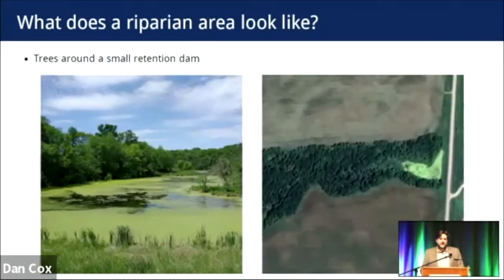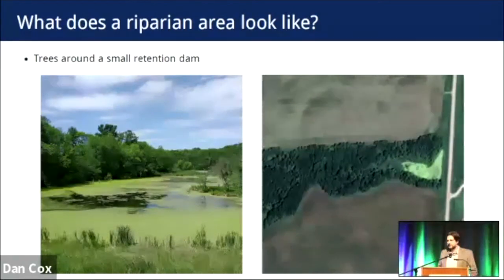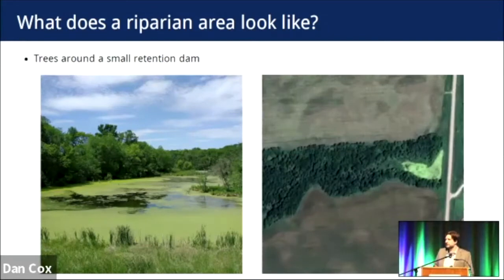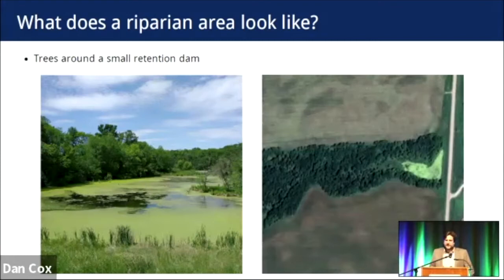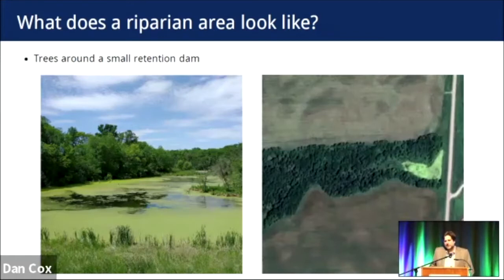What does a riparian area look like? Here's an example from the South Tobacco Creek in south central Manitoba — a small retention pond where the road acts as a dam. We can see both in the photograph and from the Google Earth image that it's surrounded by nice trees. This fits pretty well with those definitions, though we might ask whether it's a natural body of water — the river was there, we just dammed it up.